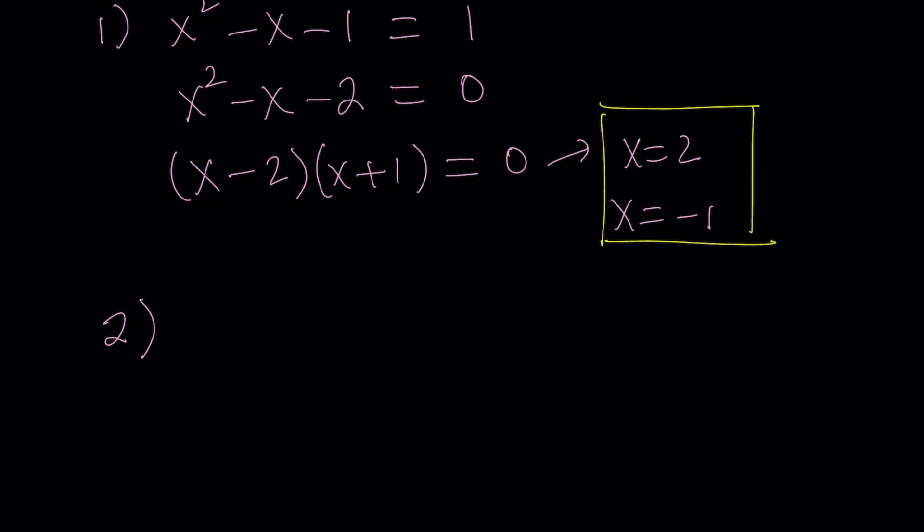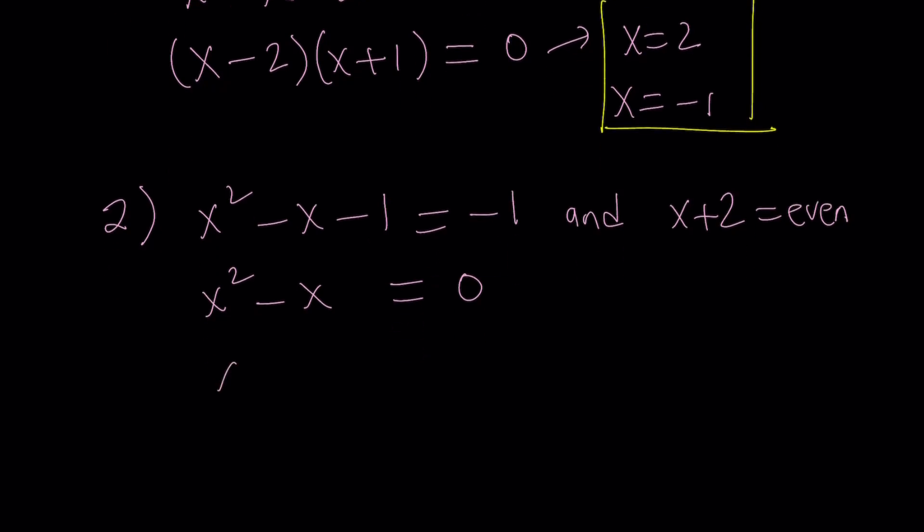Case number 2. We have the base equal to negative 1, and the exponent must be even. Now, if you add 1 to both sides, you get a simpler quadratic equation. It's quadratic, but it's factorable, very factorable. And from here, you get x times x minus 1 equals 0, and this gives you x equals 0 or x equals 1. Great. Now, x plus 2 equals even means what? 2 is even, so x must be even.